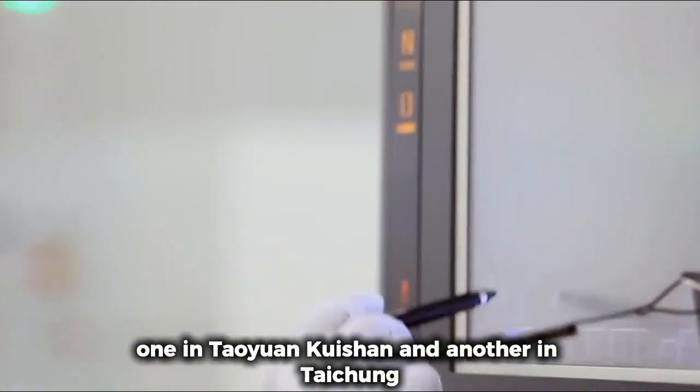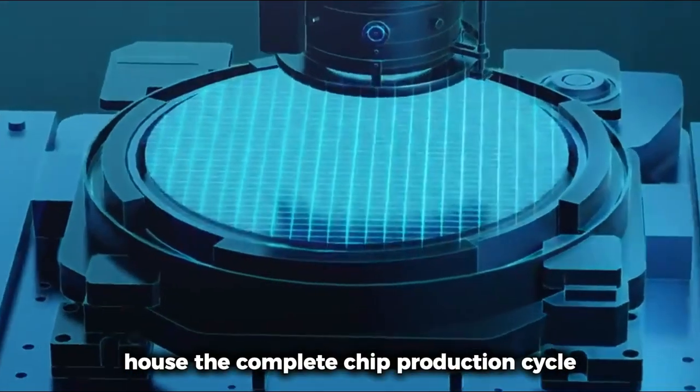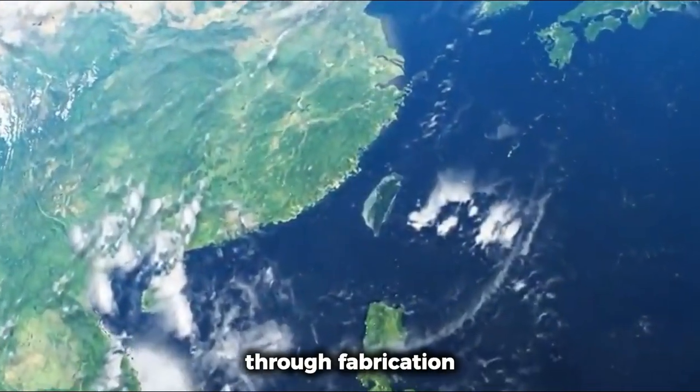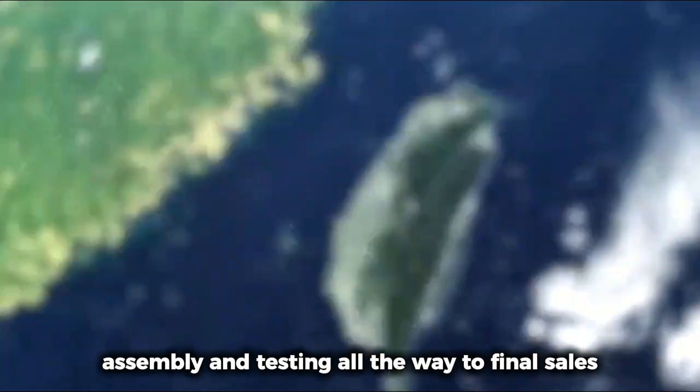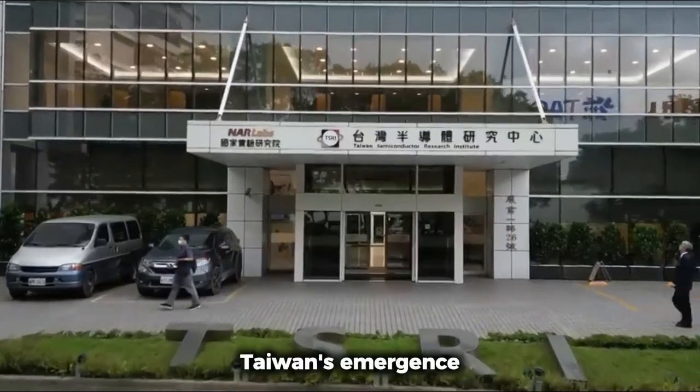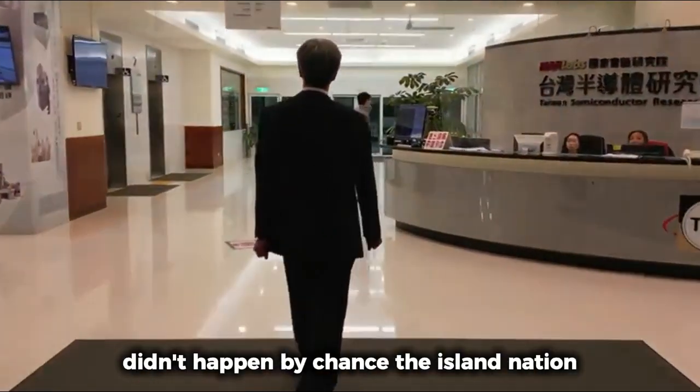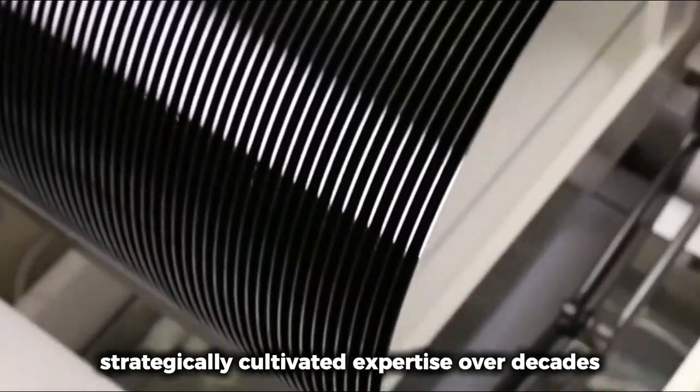Within its walls, an entire production ecosystem operates across two primary manufacturing plants: one in Taoyuan Guishan and another in Taichung Houli. These facilities house the complete chip production cycle from initial research and development through fabrication, assembly and testing, all the way to final sales.